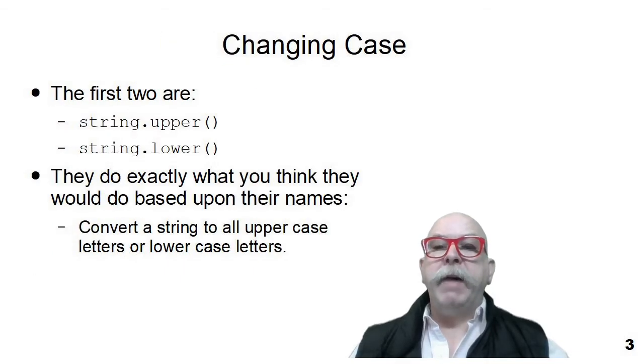The first two string methods we're going to talk about are the upper and lower string methods. They do exactly what you would think based upon their names. Upper converts a string to all uppercase letters, and lower converts a string to all lowercase letters. Let's see a program where that actually happens.